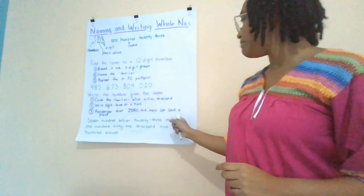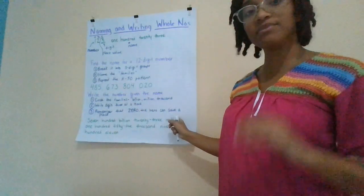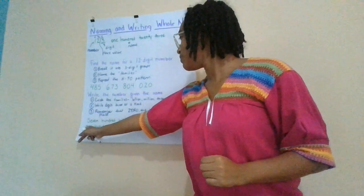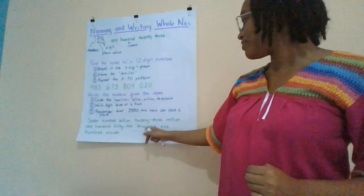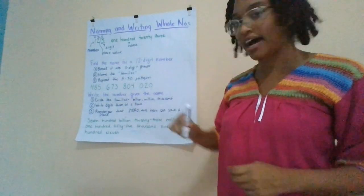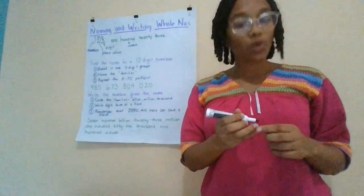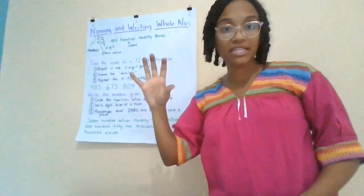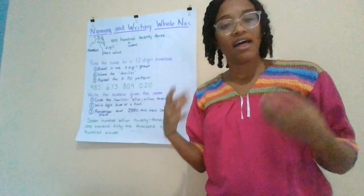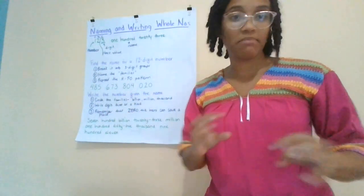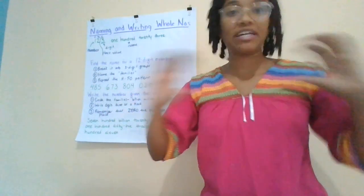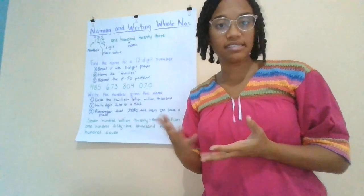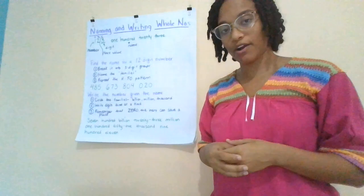Next, after billion and million comes thousand. So we look: 155,000, and that gets our last dot. In a 12-digit number, the families will always be billions, millions, and thousands. The only difference would be if there were three zeros in a row — only in that case might we skip one of the places, and we'll just have to know to put it in there.